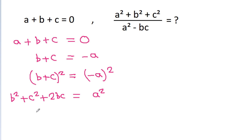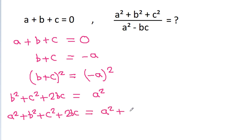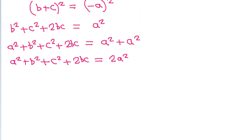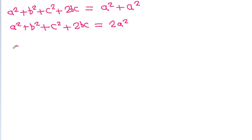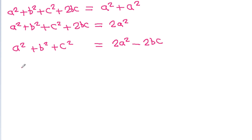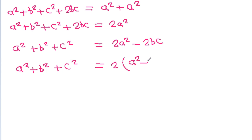If we add a square to both sides, we will get a square plus b square plus c square plus 2bc is equal to 2a square. Therefore, a square plus b square plus c square is equal to 2a square minus 2bc, and here we can take 2 common to get 2 times a square minus bc.